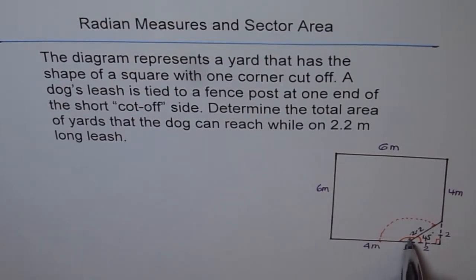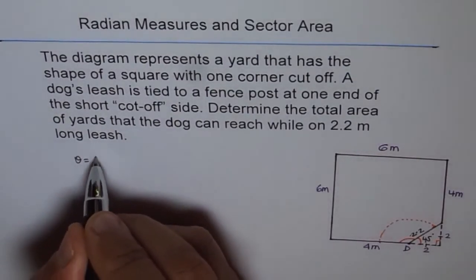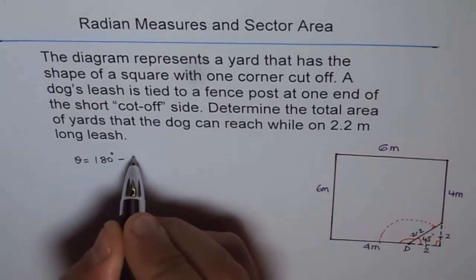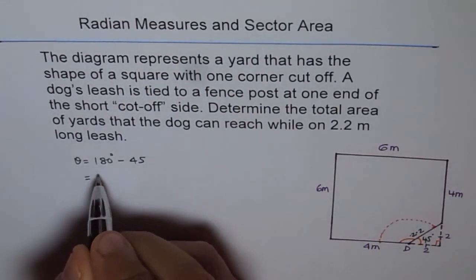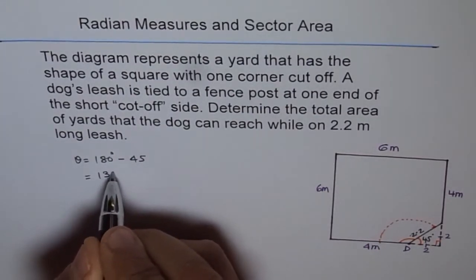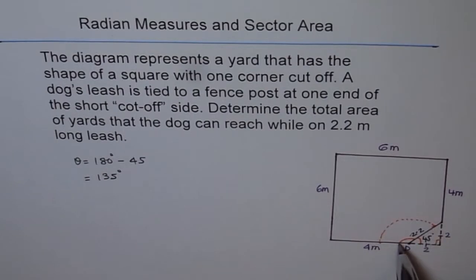So we can say that theta, through which the dog can go around, is equal to 180 degrees minus 45 degrees, which is 135 degrees. So that is the angle along which the dog can roam around in this yard.